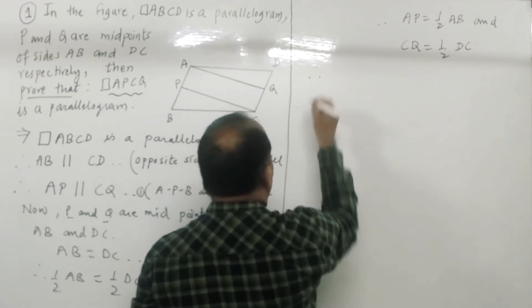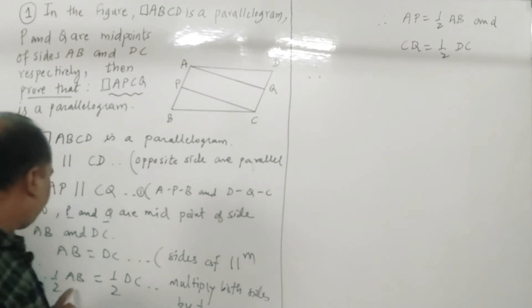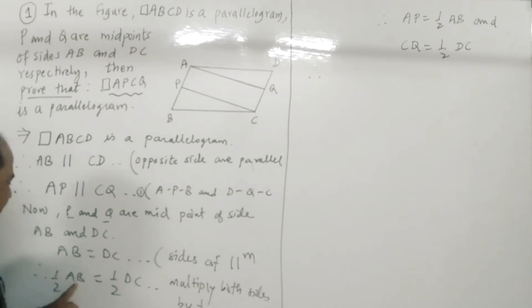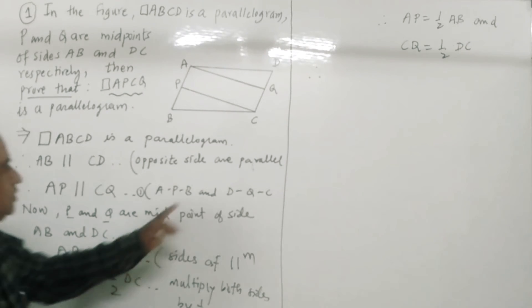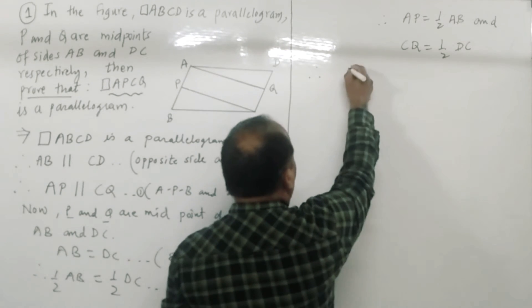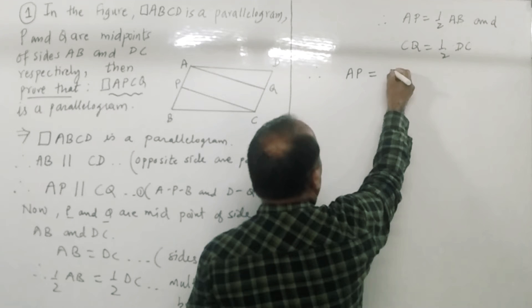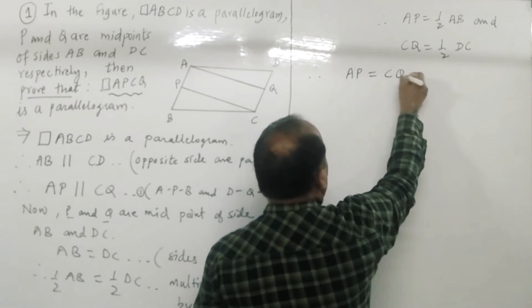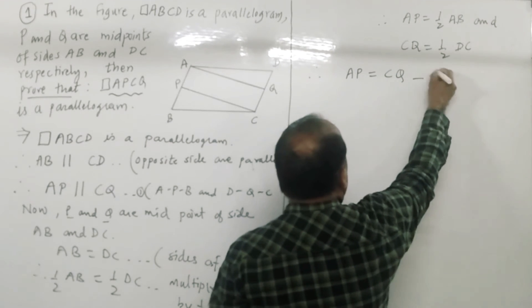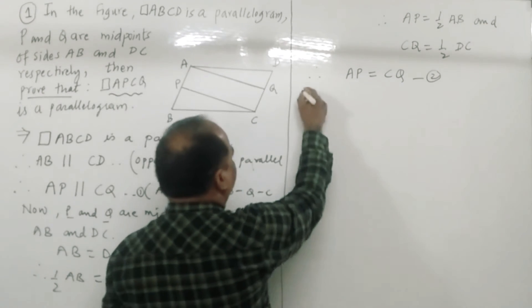Therefore, one-half AB equals AP and one-half DC equals CQ. So AP is equal to CQ — this is statement number two.